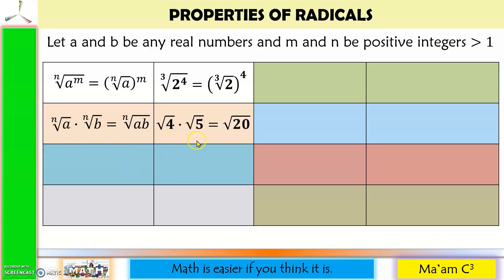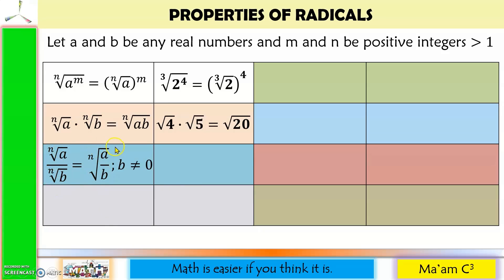Next, the nth root of a times the nth root of b is equal to the nth root of ab. If the indices are the same, you can combine the radicands into one radical symbol — for multiplication, we multiply a and b. Sample: square root of 4 times square root of 5 — both indices are 2, so we multiply 4 and 5 to get 20, giving us square root of 20. Next, the nth root of a divided by the nth root of b is equal to the nth root of a over b, provided b is not equal to 0. Example: cube root of 27 divided by cube root of 8 — since both have index 3, we get cube root of 27 over 8.